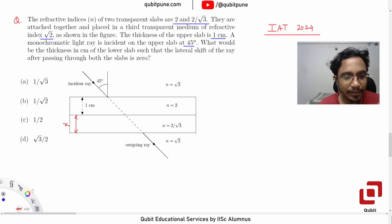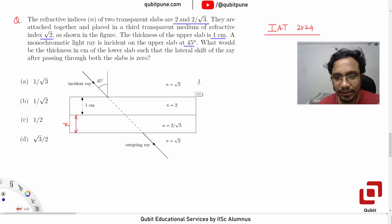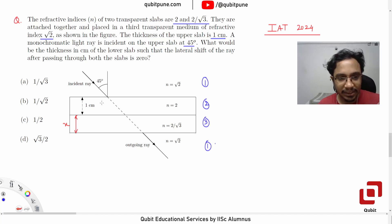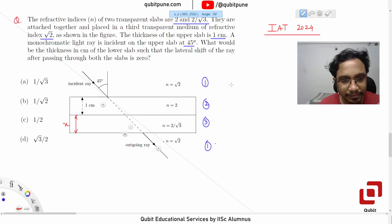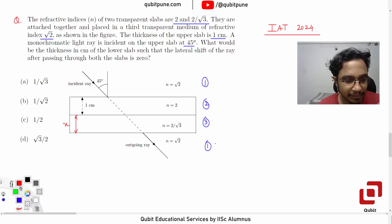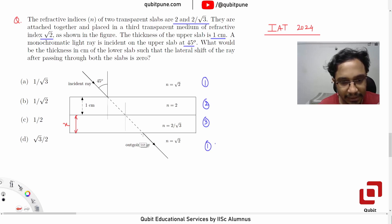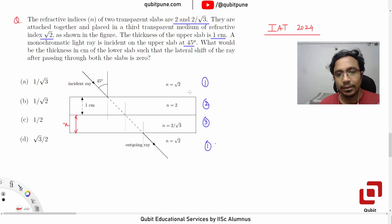Yes, three times. Let's call this medium one, medium two, medium three, and again medium one. At this particular point there will be a first refraction, then a second refraction, and a third refraction.